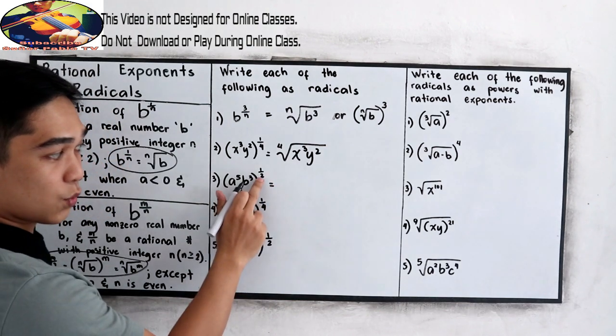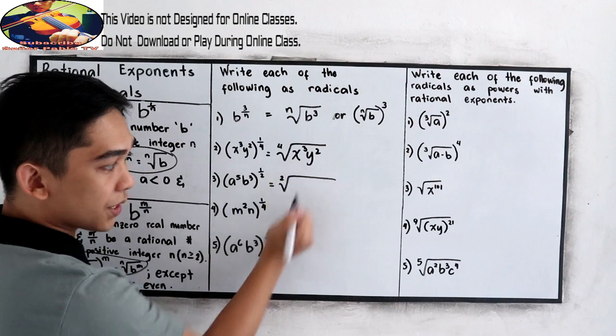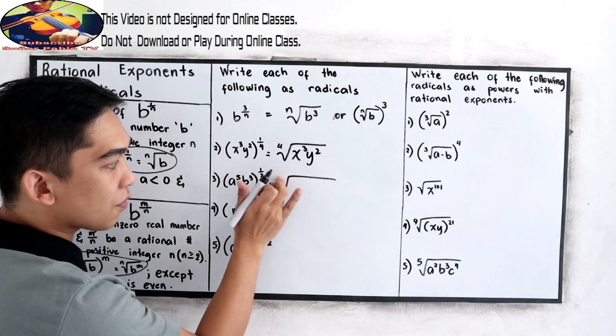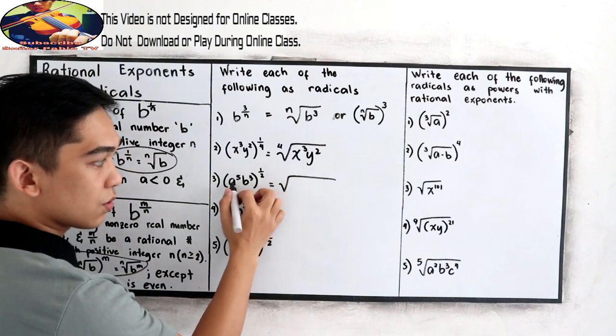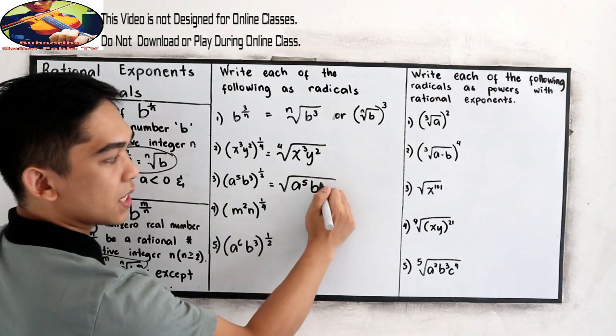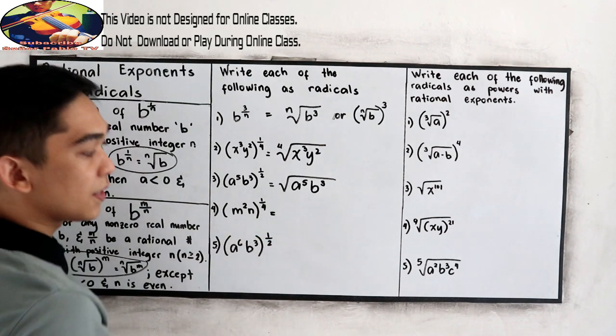Next, we have number 2. So square root, we have 2 here, but it is understood that the equivalent of our index here is 2. So A raised to 5, B cubed.